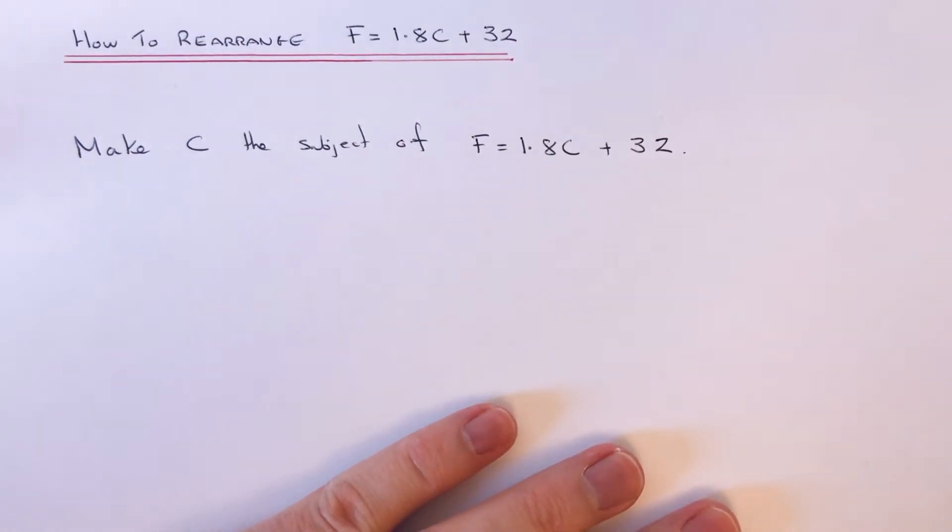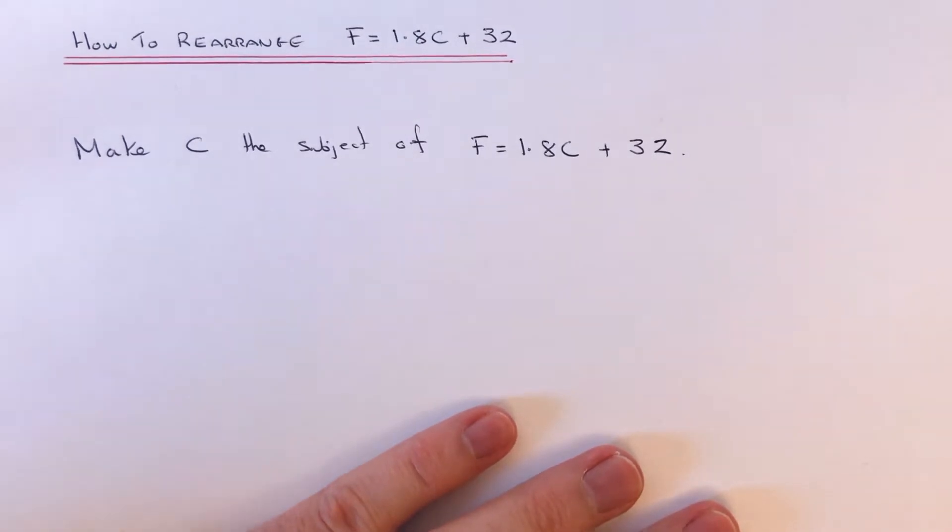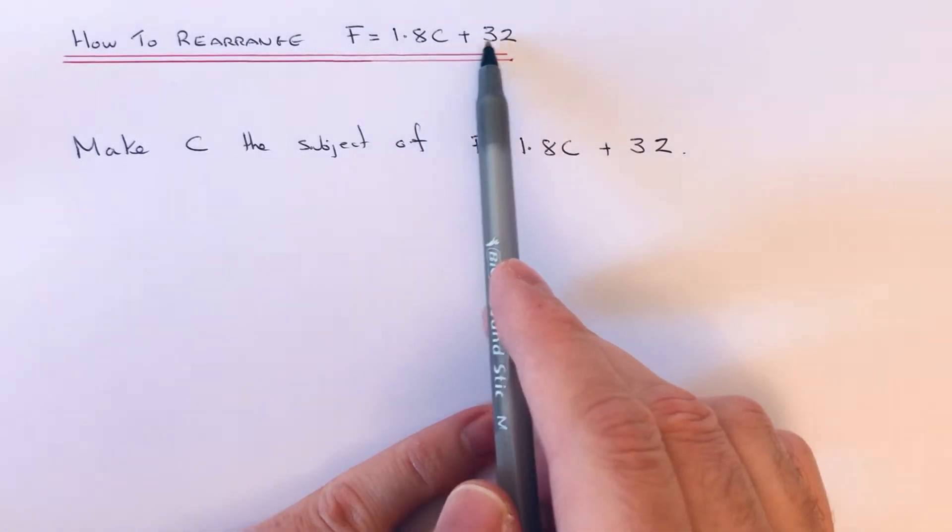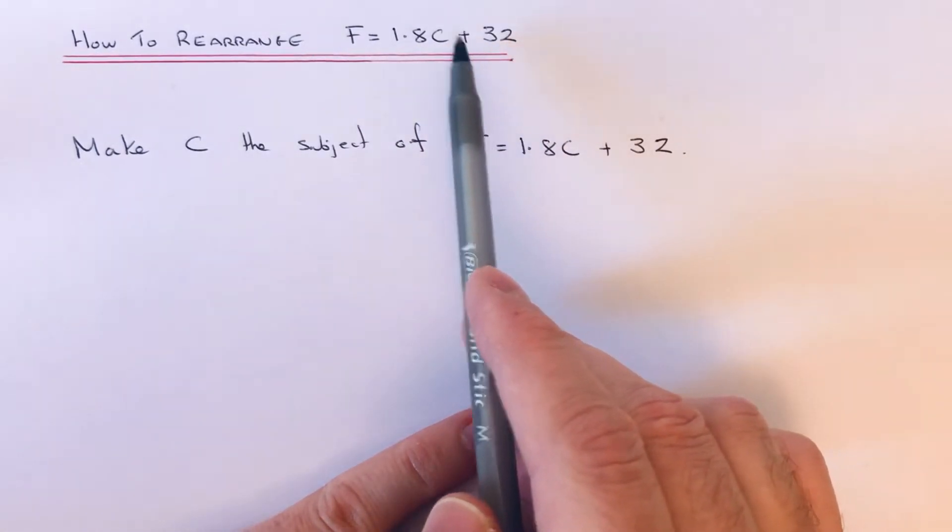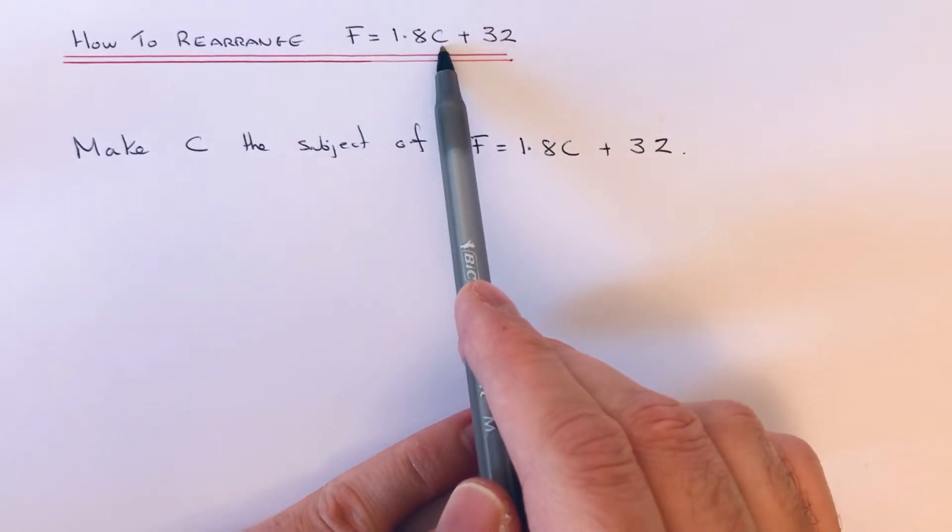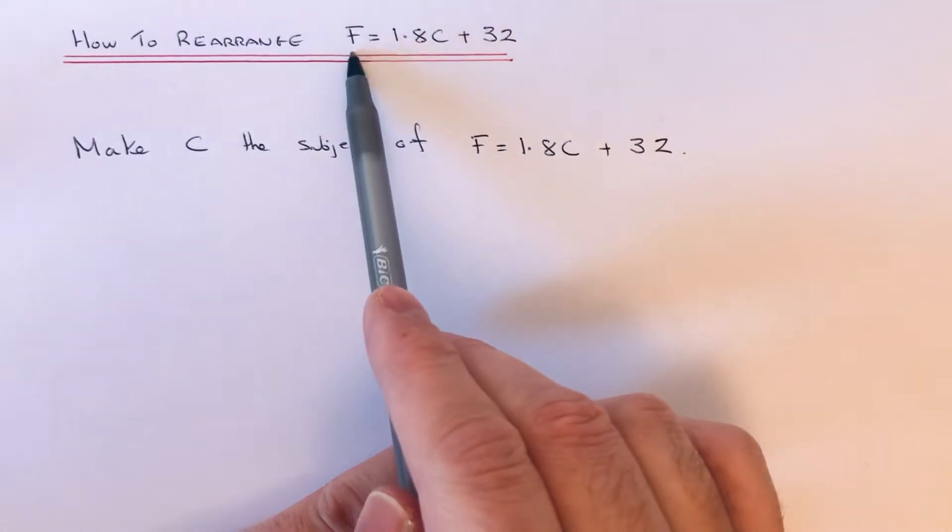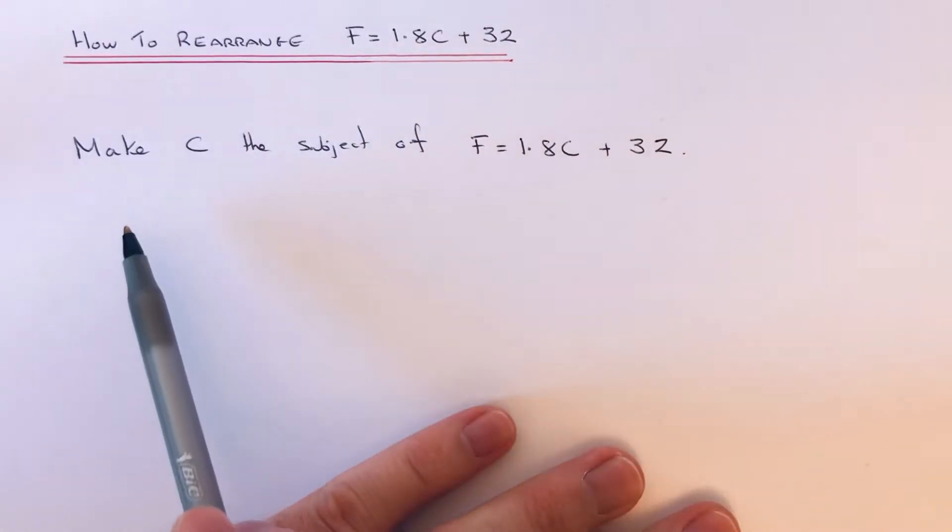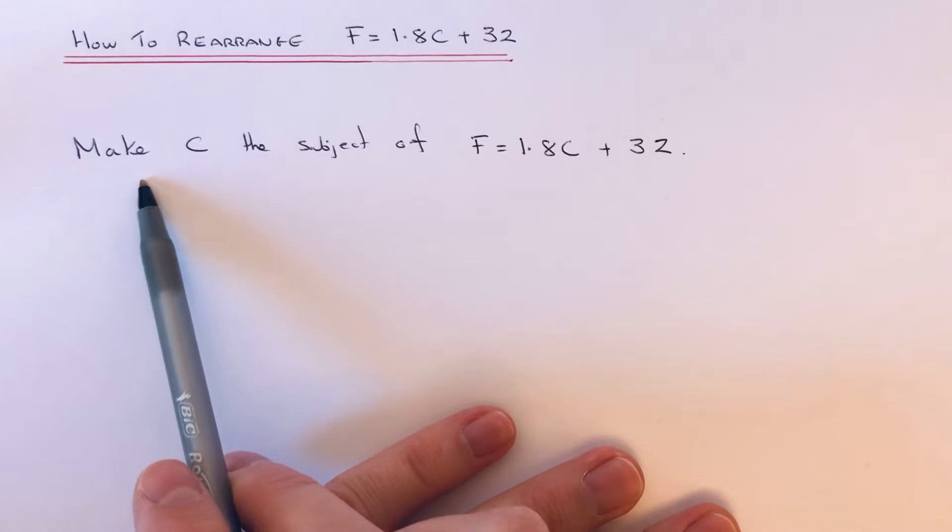Hi guys, welcome back. This is Maths 3000. Just a short video today to show you how to rearrange the formula F equals 1.8C plus 32. This is the formula used to convert temperature in Celsius into temperature in Fahrenheit.